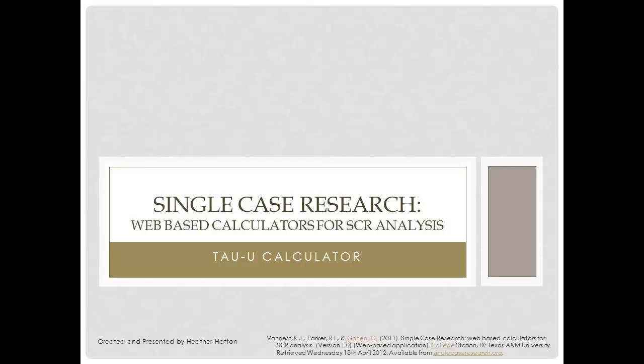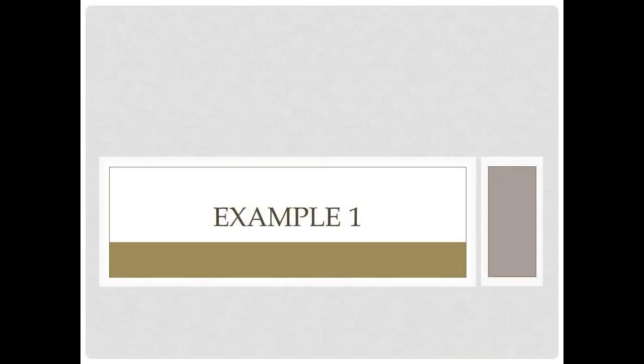If you would like to replicate the calculations as you watch the video, please download the Excel file titled 'Tau-U Sample Data'. This file contains four data sets. The video will model calculations for the first two data sets. If you would like to check your work on the last two data sets, you may download the Excel file titled 'Tau-U Sample Data with Results' to compare your findings. In this example, we will calculate the individual phase contrast for three participants in a multiple baseline design and aggregate the results into a single omnibus effect size for the study.